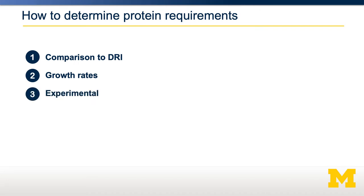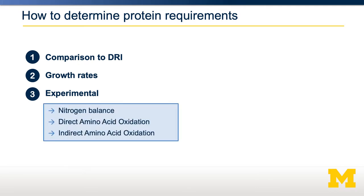The third way — where protein has a big advantage over carbohydrates and fat — is we can experimentally measure an individual's protein requirements using three different tools: nitrogen balance, direct amino acid oxidation, and indirect amino acid oxidation.